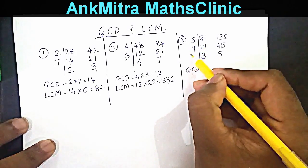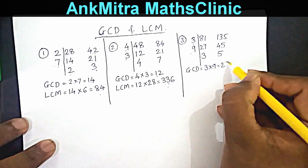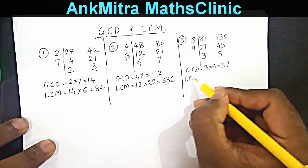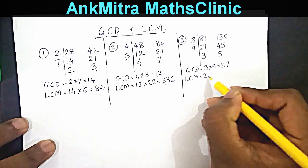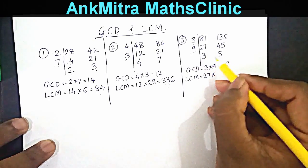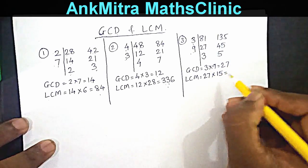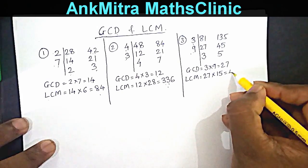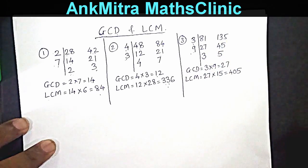GCD is the product of the common factors: 3 multiplied by 9, which is 27. So 27 is the Greatest Common Divisor of 81 and 135. LCM is the product of GCD (27) multiplied by the product of the uncommon factors (3 times 5 = 15). So 27 multiplied by 15 gives 405. Therefore, LCM of 81 and 135 is 405.